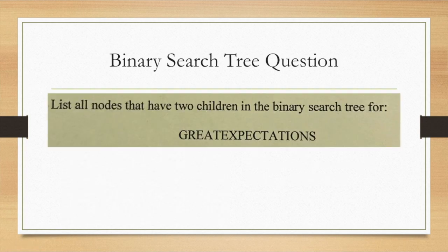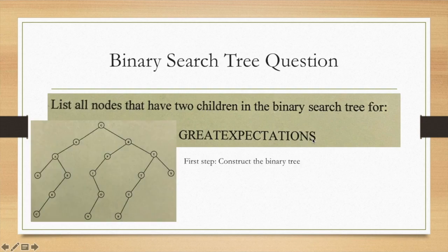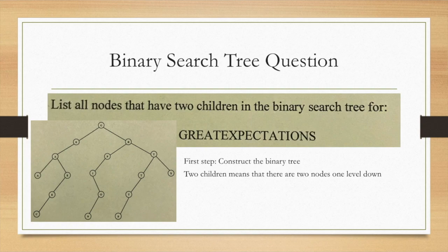Here we've got a binary search tree question. You list all the nodes that have two children in the binary search tree for great expectations. I'm not going to do this step by step on constructing the search tree. That's what it looks like, though. This is not a heap, so there can be some weird kind of constructions. Two children means that there are two nodes one level down from it. So that would not be like this E having two levels of children, but rather this A, where it's an A and an E, or this G, where it's E and an R. So we identify those as being the G, the A, the R, and the T. And those are the answers.